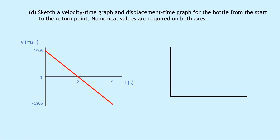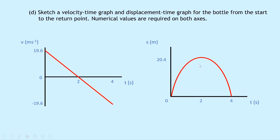For the displacement-time graph, we draw S in metres versus time in seconds. The graph shows a curve starting at zero displacement, rising to a maximum of 20.4 metres at two seconds, then returning to zero at four seconds. Although the bottle travels straight up and down, the displacement-time curve must span the full four seconds — two seconds rising and two seconds falling — not a narrow curve, to correctly show what's happening over time.